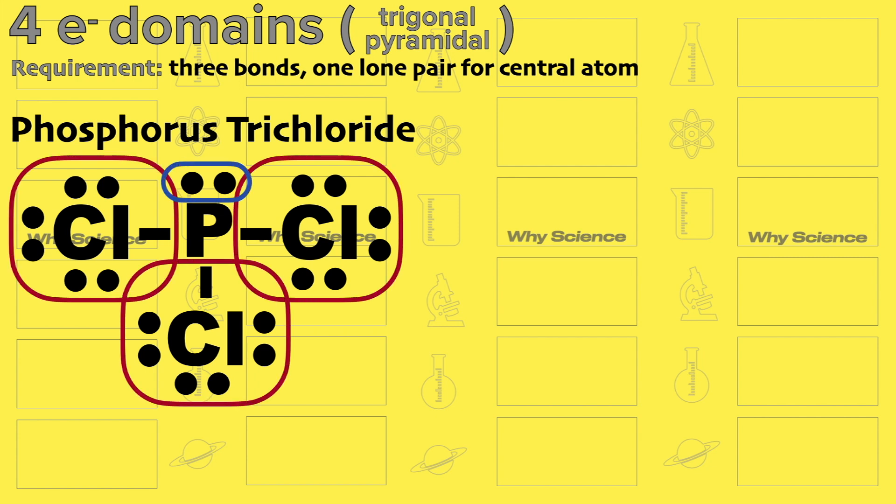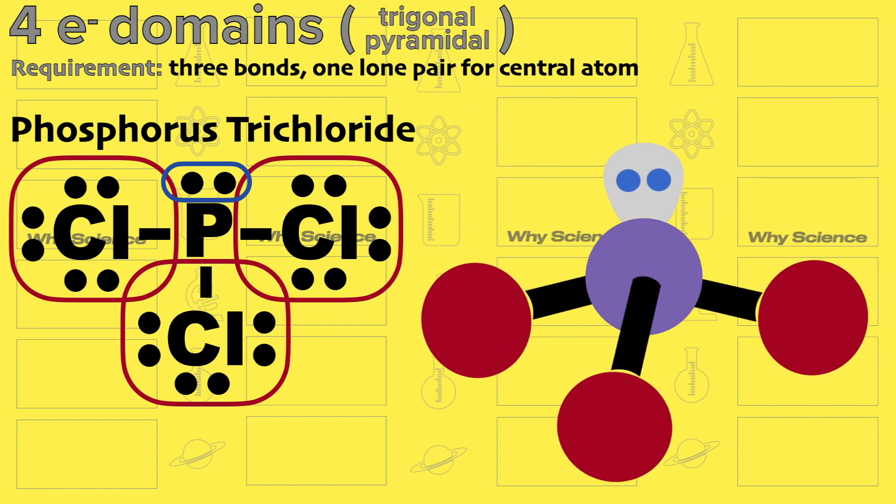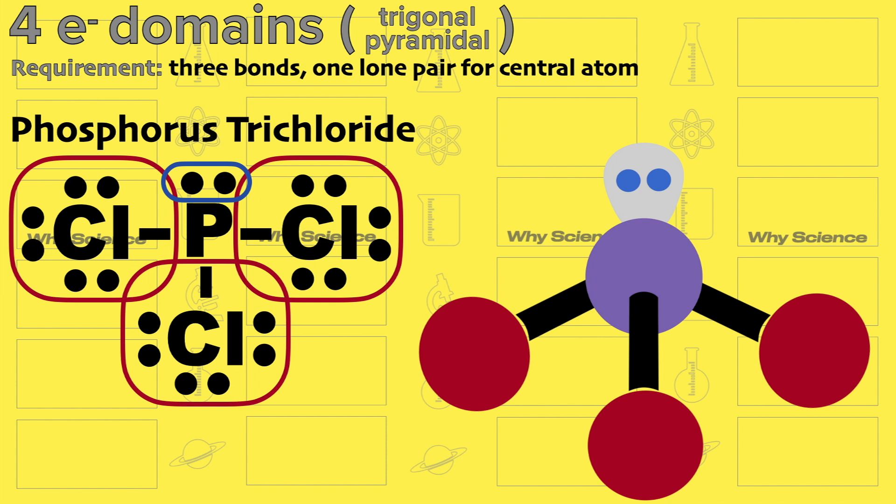Here is our central atom, phosphorus, with three atoms of chlorine. Adding the lone pair will push the three down. To further visualize this, the molecular geometry looks like this, which resembles a pyramid with the three bonded atoms facing down.